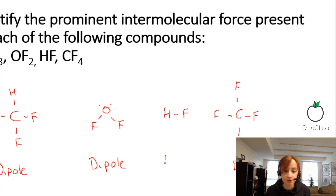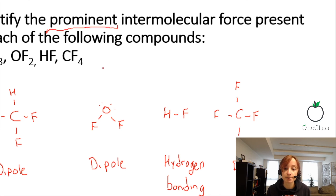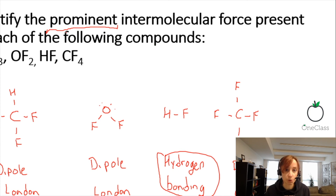HF is hydrogen bonding. Hydrogen bonding only occurs when there is a hydrogen bound to oxygen, fluorine, or nitrogen — those are the only three atoms that qualify. The question asked to identify the prominent intermolecular forces, but all of these have London forces as well; they're just not as strong. London forces are the weakest, dipole-dipole is the second strongest, and hydrogen bonding is the strongest. HF has all three, but hydrogen bonding is the most prominent intermolecular force.